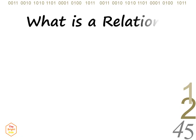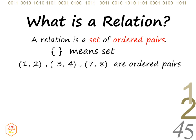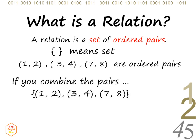What is a relation? A relation is a set of ordered pairs. For example, (1, 2), (3, 4), (7, 8) are ordered pairs. So if you combine several ordered pairs, it becomes a set of ordered pairs. This set is called a relation.